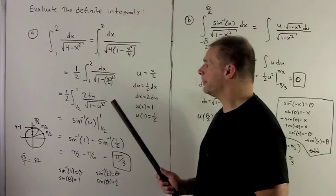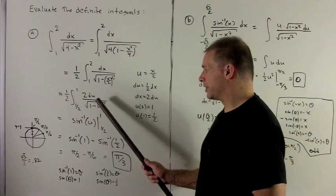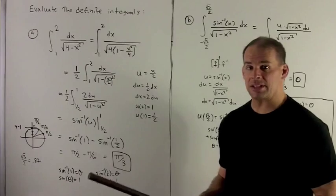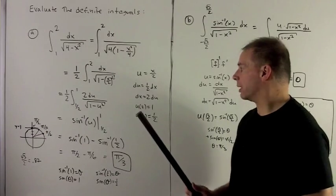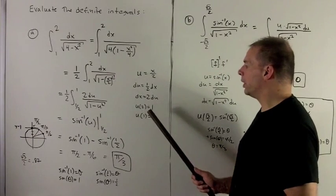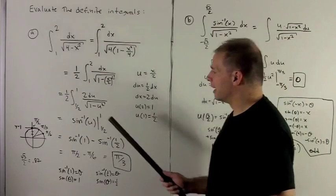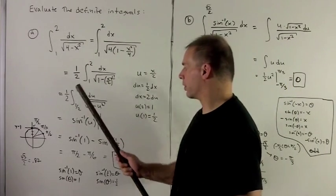We substitute in, and we notice there's no more x terms in here. Since everything's in u, we can get rid of the x limits, replace them with u limits. So I'm going to put 2 into u and 1 into u and see what comes out. So u of 2 is 1, u of 1 is a half, and now I have my new limits of integration.